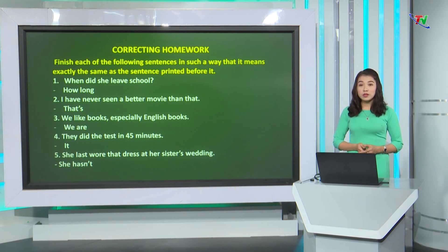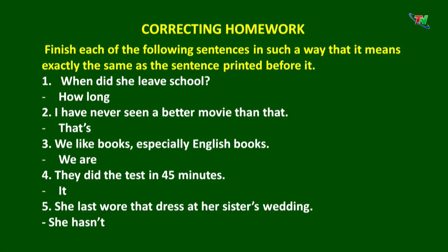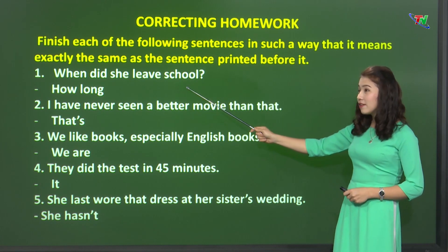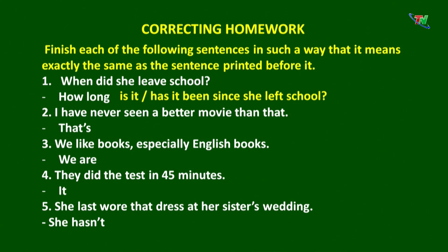Chúng ta sẽ vận dụng các cấu trúc mà chúng ta đã học ở buổi học hôm trước để biến đổi những câu này. Cô có câu số 1. Chúng ta bắt đầu bằng từ 'how long'. Chúng ta vận dụng cấu trúc: when + chủ ngữ + động từ, bằng với cấu trúc 'how long has it been since' cộng với mệnh đề ở quá khứ đơn. Vậy câu số 1 ta có: 'How long has it been since she left school.' Ở đây chúng ta có động từ 'leave' chuyển thành 'left'.